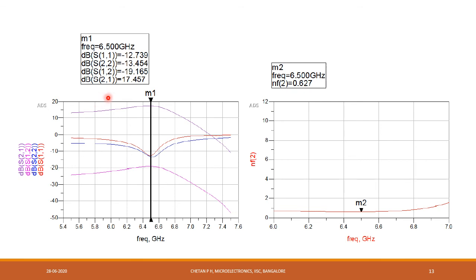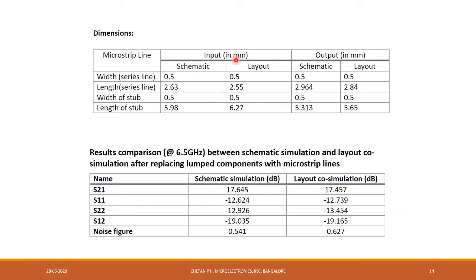After doing that, we got a S21 around 17.457 dB and a noise figure of around 0.627 dB. Then these are the dimensions that you can check here. You can use them. This is a schematic microstrip line dimension. This is a layout microstrip line dimension. These are the parameters that are compared with layout and the schematic at 6.5 gigahertz.